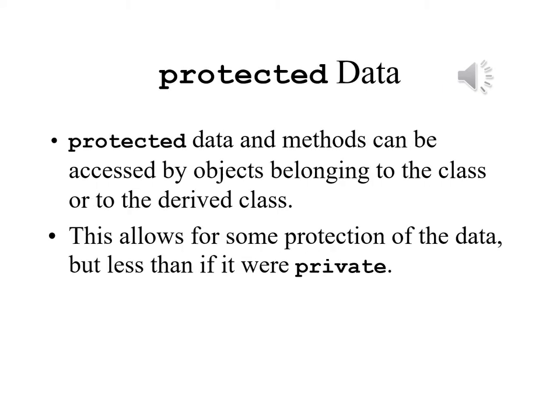What we're looking for is something in between — something that will allow items that are private to be shielded from the rest of the world, but at the same time allowing their use by objects belonging to derived classes. And this is where the word protected comes into use. Protected data and methods can be accessed by objects belonging to the class to which they belong, but they are also available to objects belonging to classes that are derived from the base class in which they appear. This allows you a degree of protection of data, but less than if they were private, specifically because we want to be able to use them in derived classes as well.